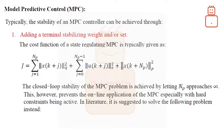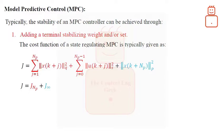In literature, however, it is suggested to solve the following problem instead: the combined MPC and LQR controller, where J sub N_p is the MPC problem, while J sub infinity is the LQR problem. So the matrix P in the last term of the cost can be determined by solving the MPC problem but with horizon approaching infinity, which is simply the LQR problem.